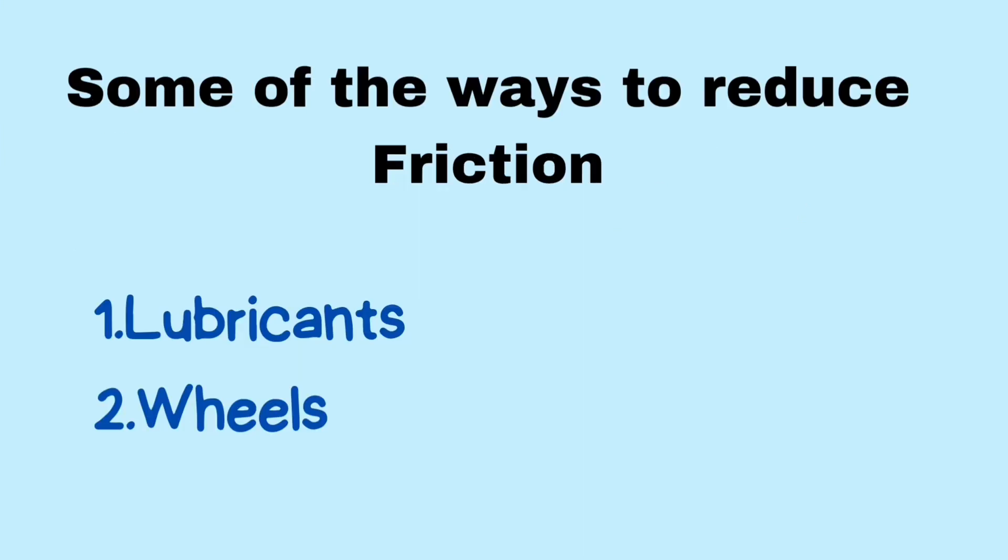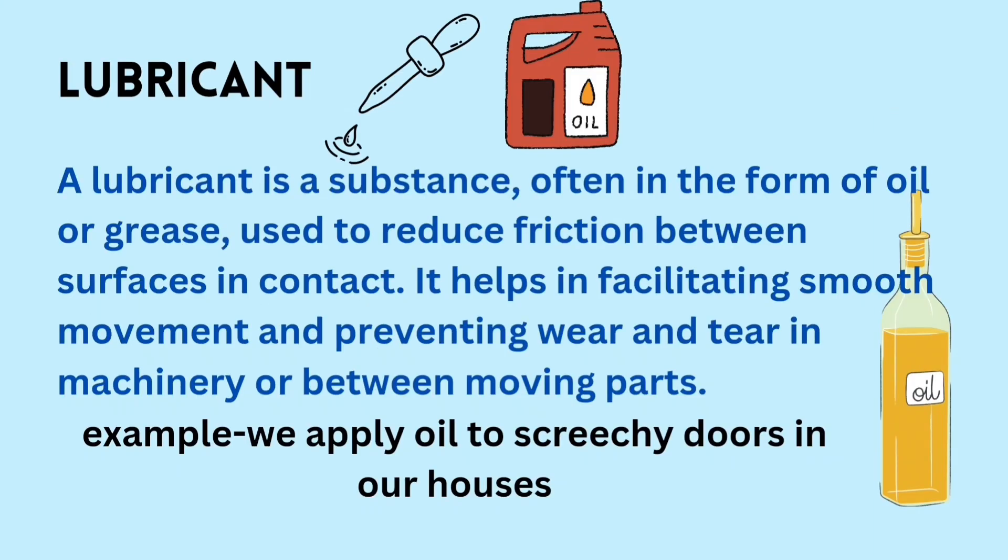Some of the ways to reduce friction: 1. Lubricants. 2. Wheels. A lubricant is a substance, often in the form of oil or grease, used to reduce friction between surfaces in contact. It helps in facilitating smooth movement and preventing wear and tear in machinery or between moving parts. Example: we apply oil to screechy doors in our houses.